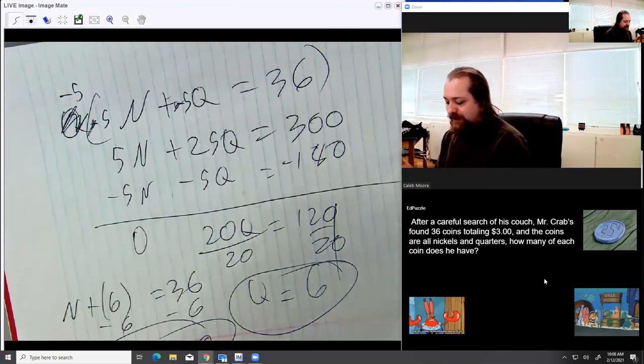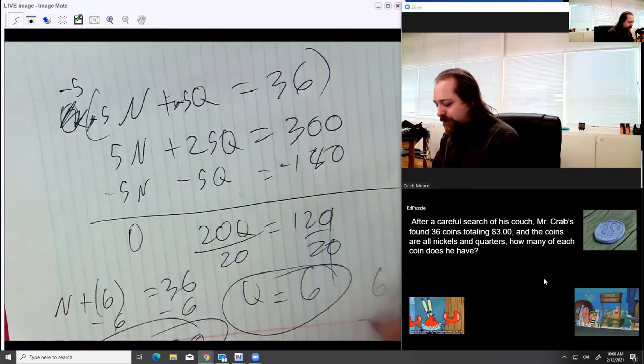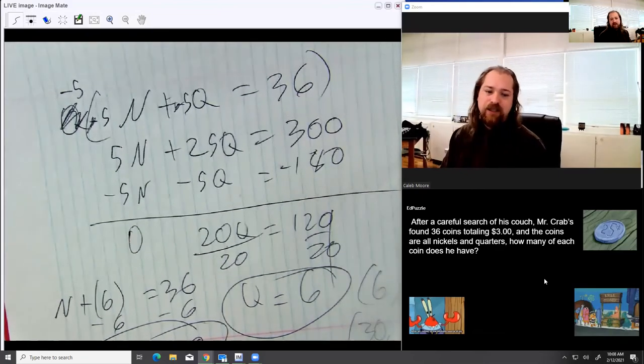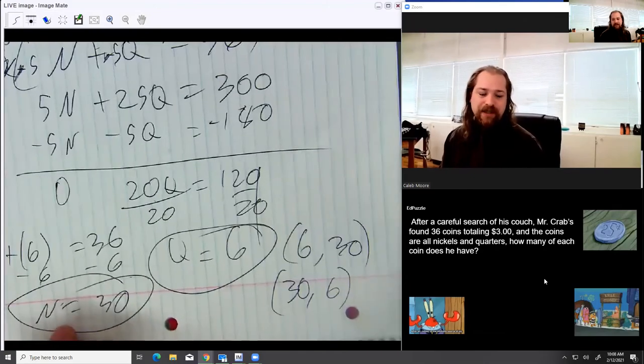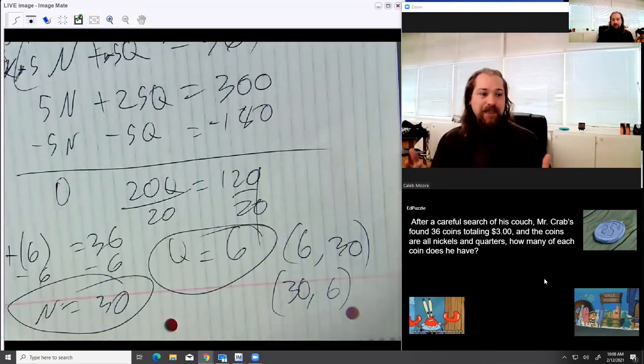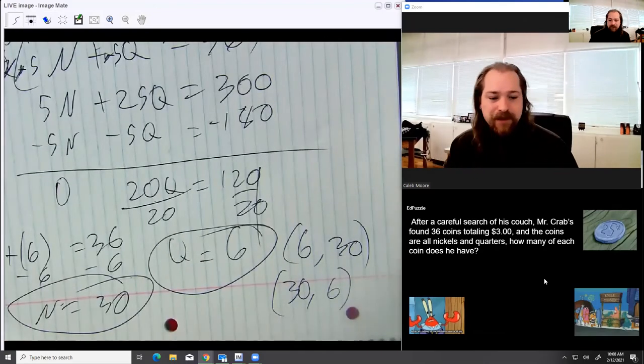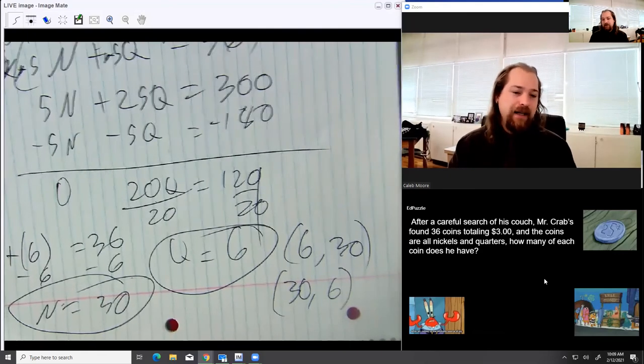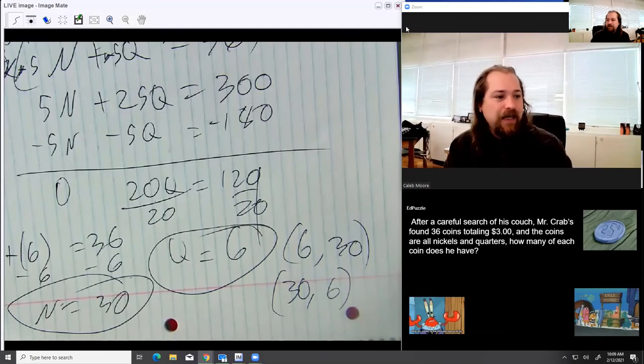All right. So writing this pair, it could be 6 comma 30, or it could be 30 comma 6. Just because there isn't an X and a Y, it's hard to tell which comes first. I would recommend generally alphabetical order. That's what I have for you. If you have any questions, please contact me. If you need to get any work or assignments done today, please contact me. And I will talk to you later. Have a great day.